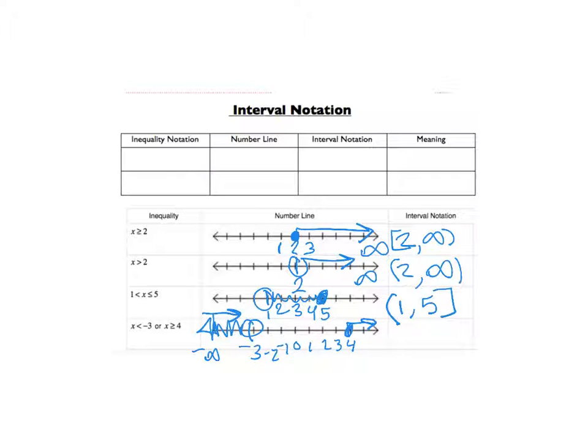We look from left to right. So we're going to do parenthesis, negative infinity, comma, where we stop, 3, parenthesis, union. We're going to do a bracket on 4, comma, positive infinity, parenthesis.